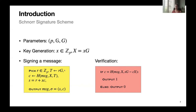One common approach to construct a Schnorr-based multi-signature scheme is to let parties collaboratively generate a commitment T, and then use the linearity of the signature scheme to obtain the final signature. In the three-round case, it is much easier to generate the commitments collaboratively, but in the two-round case it is not as easy.